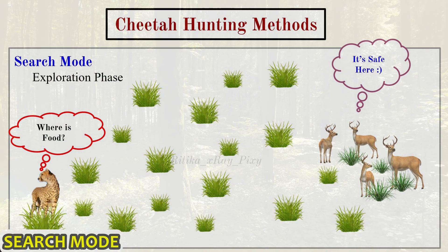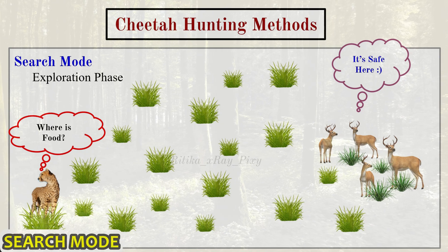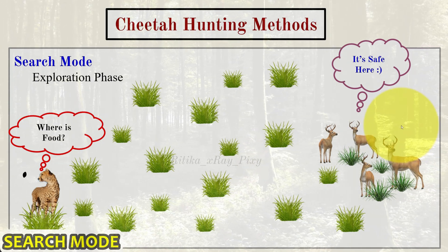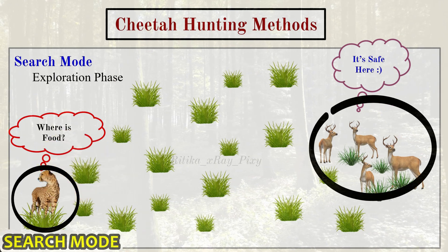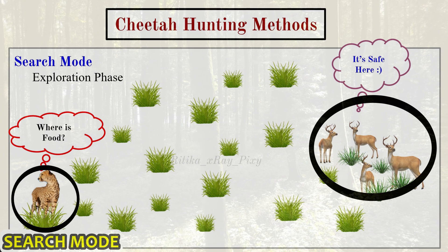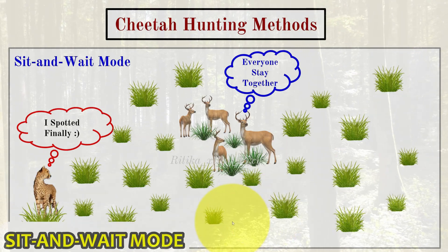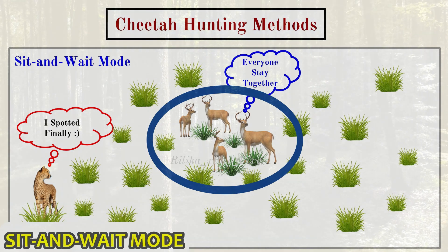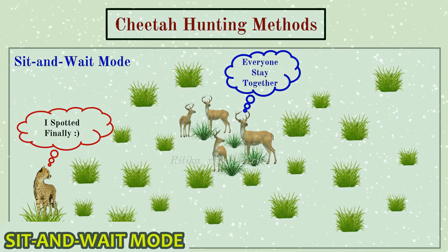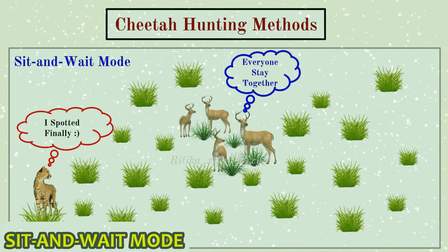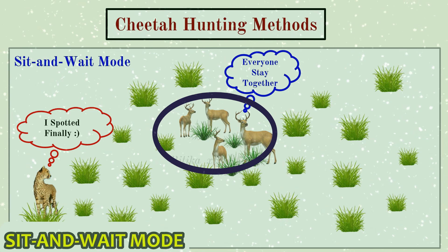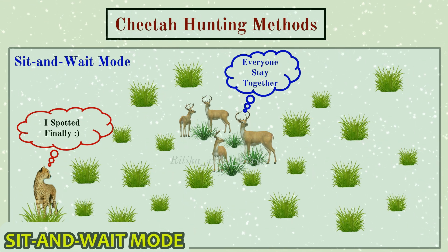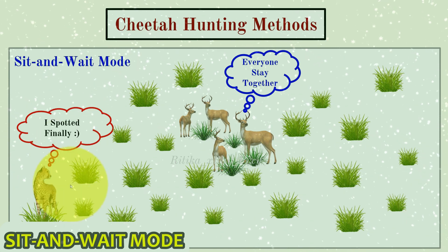In search mode — the exploration phase — search agents explore the search space to find the optimal solution. The cheetah is actively looking for the target, and the prey can be found when the cheetah is roaming or observing its surroundings. In sit-and-wait mode, when the cheetah spots its prey, it may choose to wait for the prey to approach before attacking, since a sudden attack increases the chance the prey escapes.